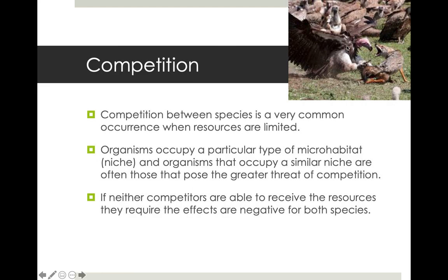Competition between other species is a big deal. When you live in a community of other organisms, you have to compete with those other species for the same limited resources. For example, griffon vultures and jackals in Africa are both scavengers relying on carrion — dead animals that other predators have killed or that have died of natural causes. There's only so much carrion on the African plains, and hyenas and lions compete for it too.